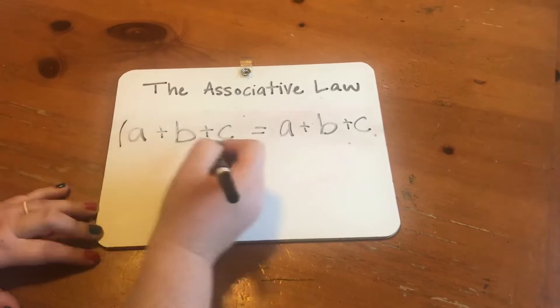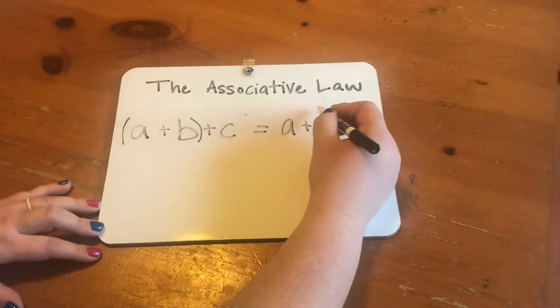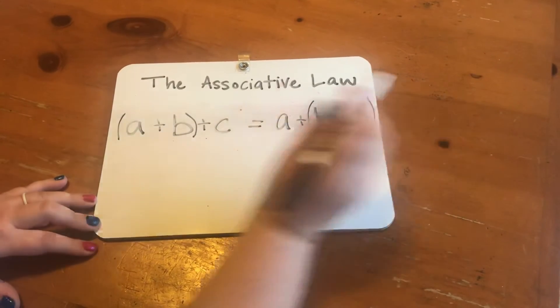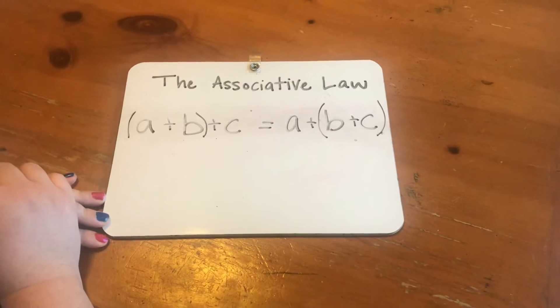First we'll have parentheses over here and then we'll have parentheses over here. And that's the associative law for addition.